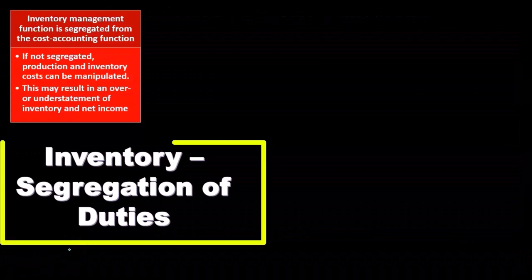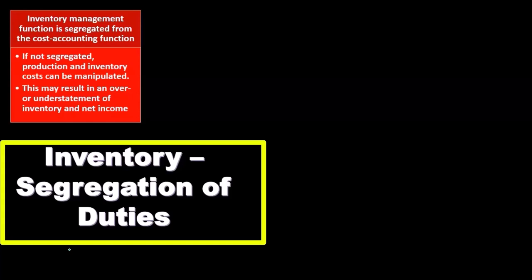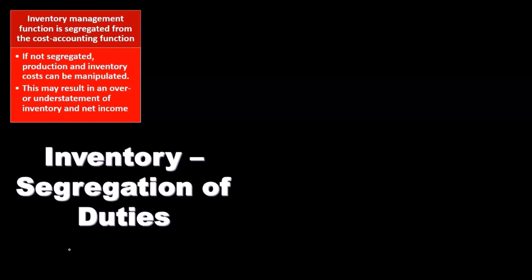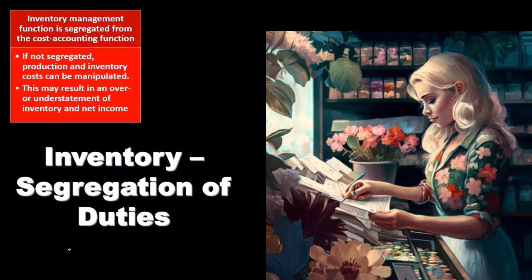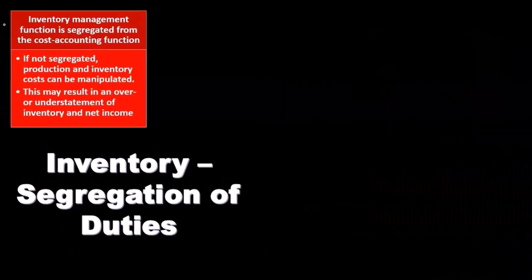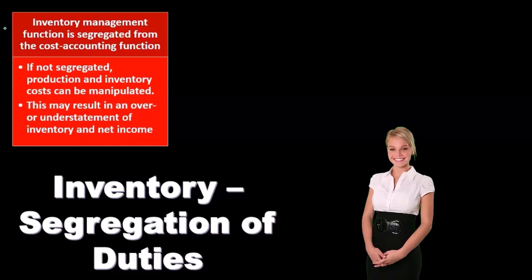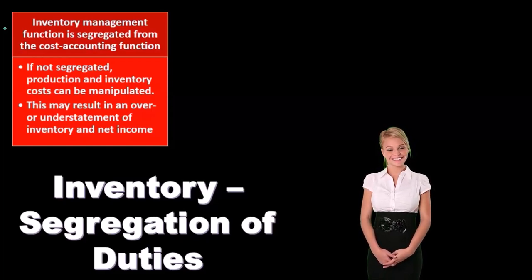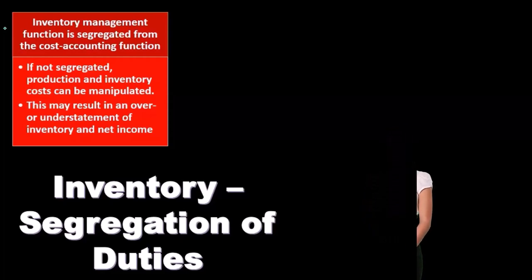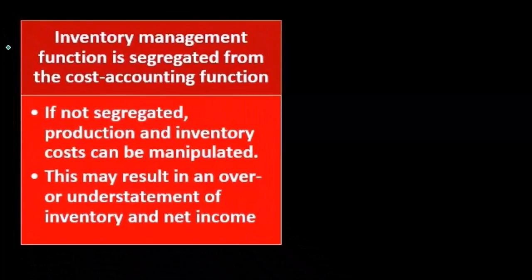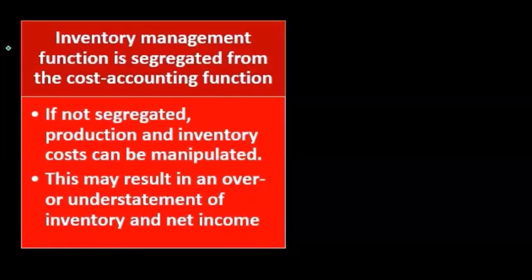Now we'll think about segregation of duties in relation to inventory. This is one of the major internal controls. Segregation, or separation, of duties means that key functions are kept separate, so that any theft or fraud would require collusion — multiple people planning together to commit fraud. Note that larger companies can implement more segregation of duties than smaller ones, where the appropriate level depends on the organization's size and available personnel.